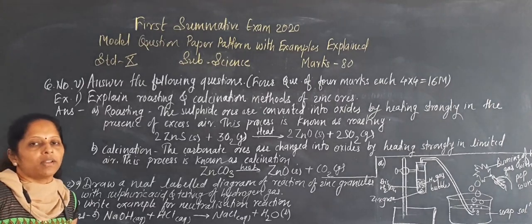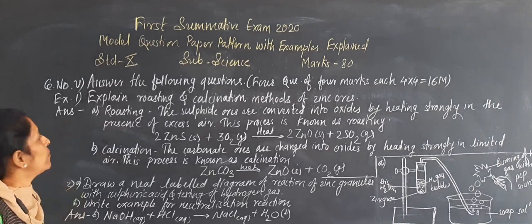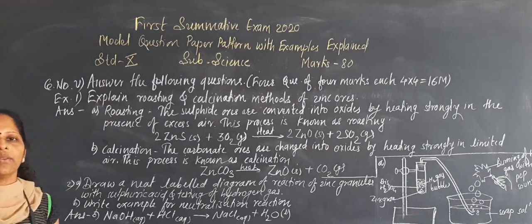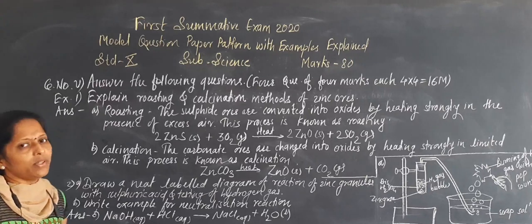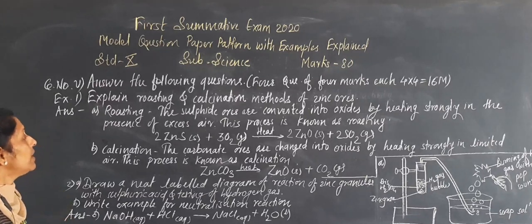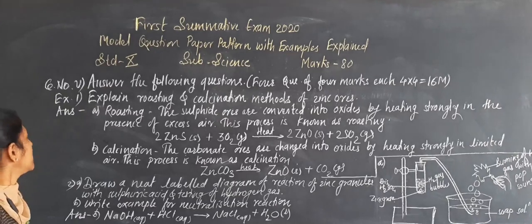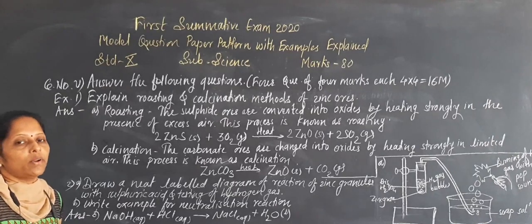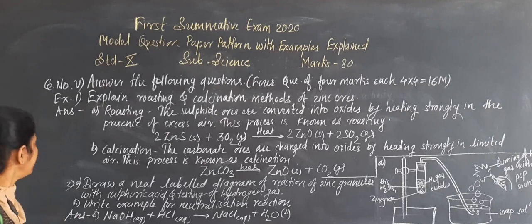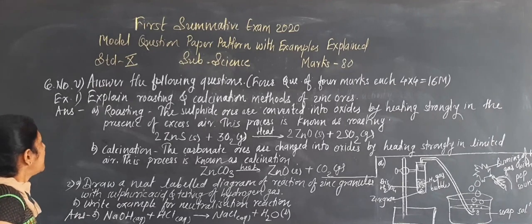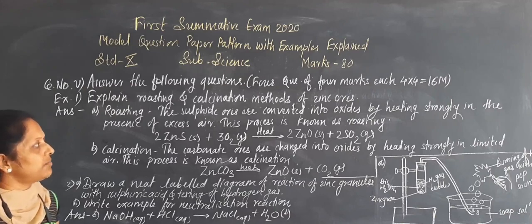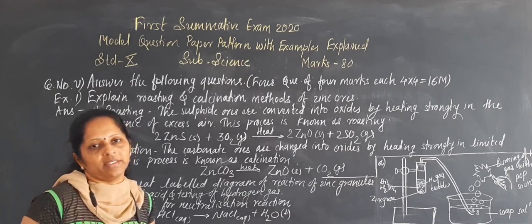So totally, for question number 5, there are 16 marks. Here we are going to see about the examples for question number 4 and question number 5, where there are 2 questions. We are going to see them as examples.